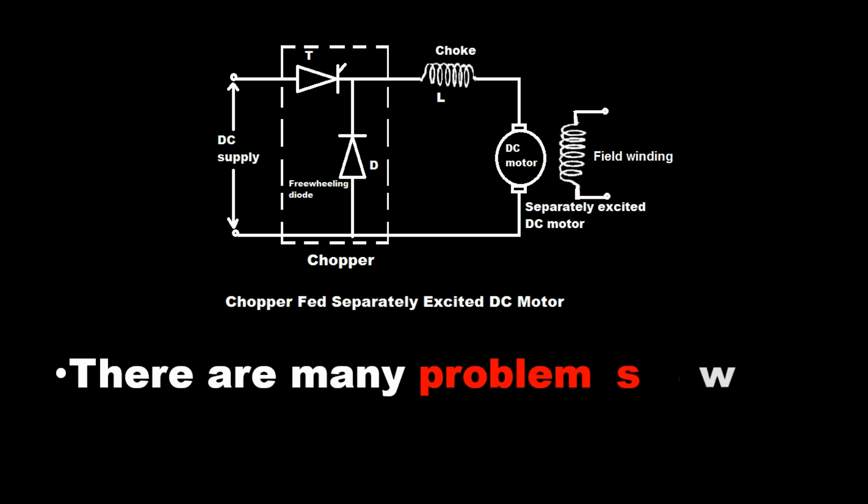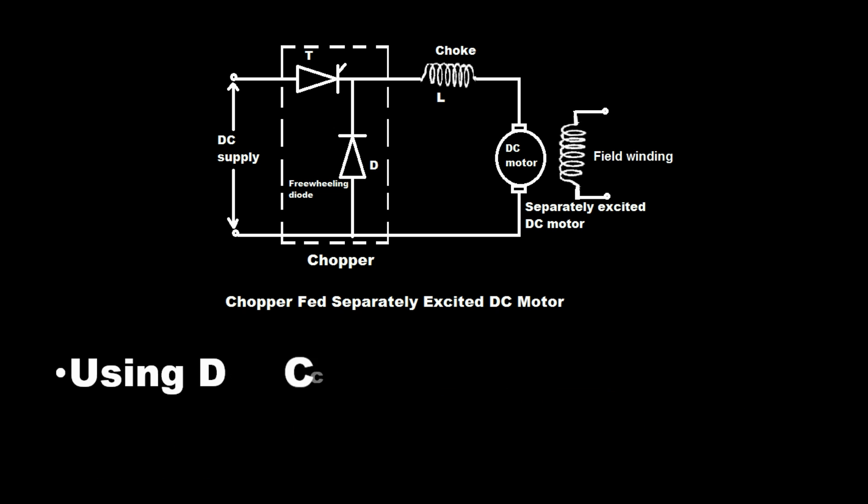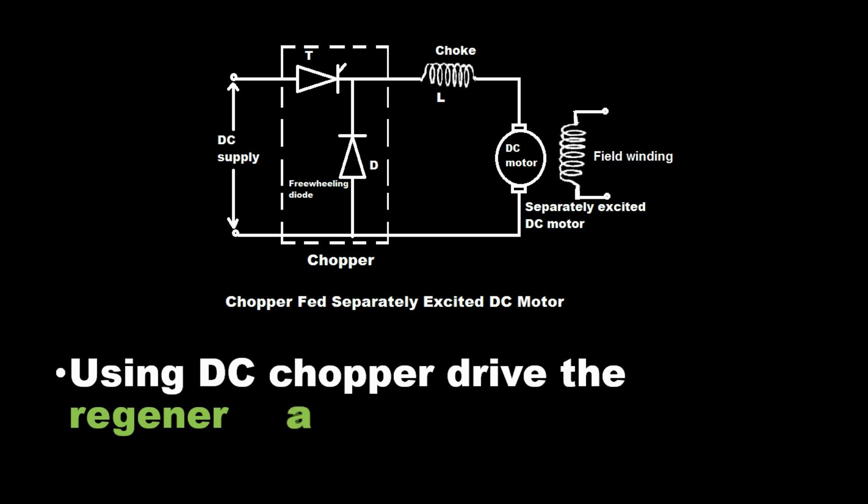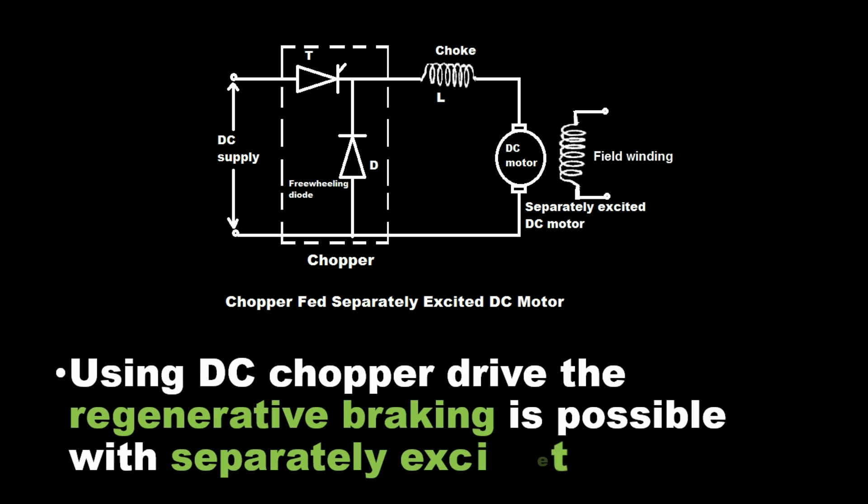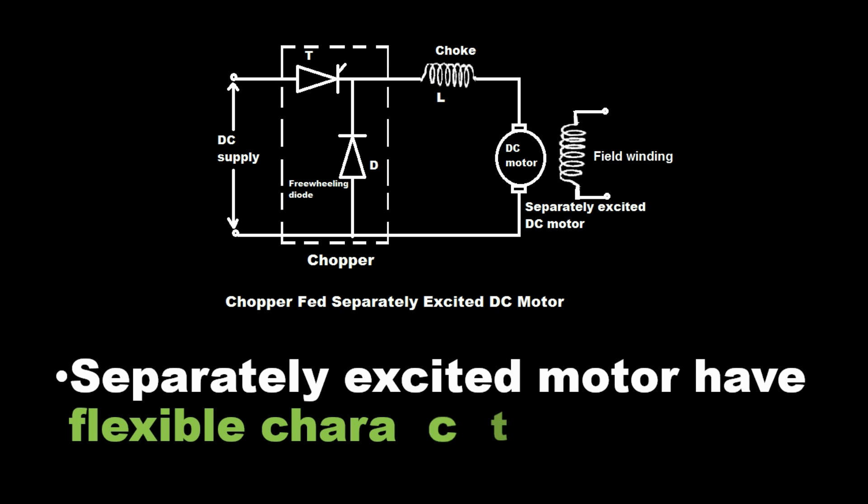There are many problems with regenerative braking of DC series motor. Using DC chopper drive, the regenerative braking is possible with separately excited DC motor. Separately excited motor have flexible characteristics.